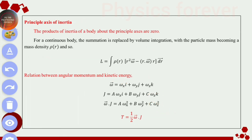The principal axis of inertia: the product of inertia of a body about the principal axis are zero. These are all the important points. For a continuous body, the summation is replaced by a volume integral, and the particle mass becomes a mass density.